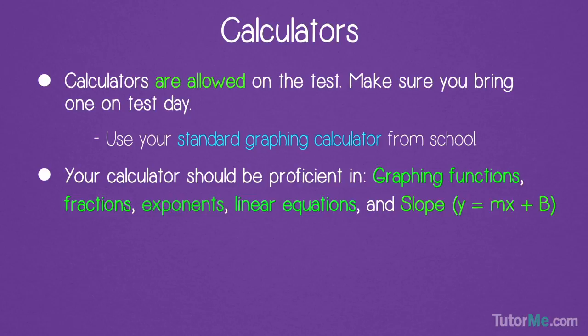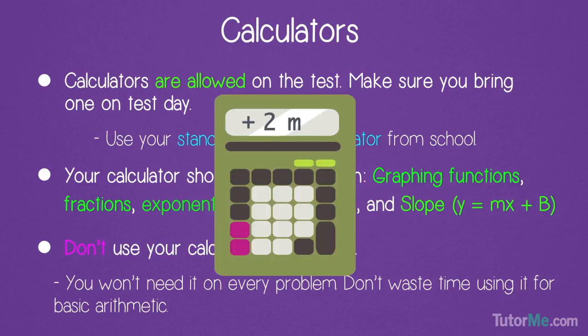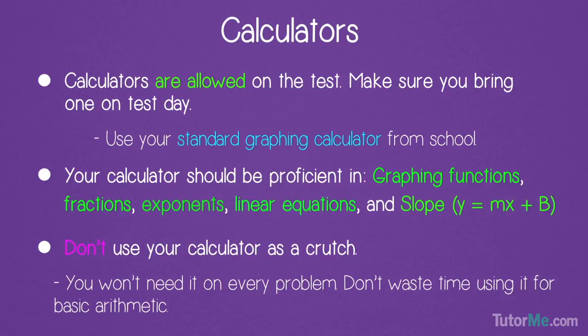An important note: don't use your calculator as a crutch. You won't need your calculator on every problem, so don't waste your time using it for basic arithmetic. Remember, your use of time is the most important factor to succeeding on the ACT. Most of the time, mental math is safer for basic arithmetic. Typing everything into your calculator can add up to two minutes on your total time, which could cost you a question or two. These questions could make a difference of a whole point on your composite score.